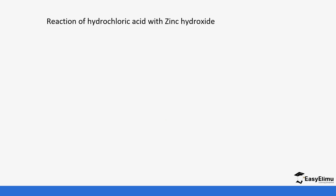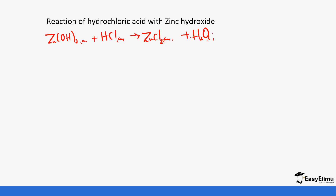One more neutralization example: the reaction of hydrochloric acid with zinc hydroxide. Zinc hydroxide in aqueous state reacts with hydrochloric acid in aqueous state to form zinc chloride in aqueous state plus water in liquid state. To balance: we have one zinc on both sides, but the oxygens and hydrogens don't balance, so we put a 2 in front of hydrochloric acid — giving two hydrogens and two chlorines — and a 2 in front of water to balance the hydrogens. This balances the equation.